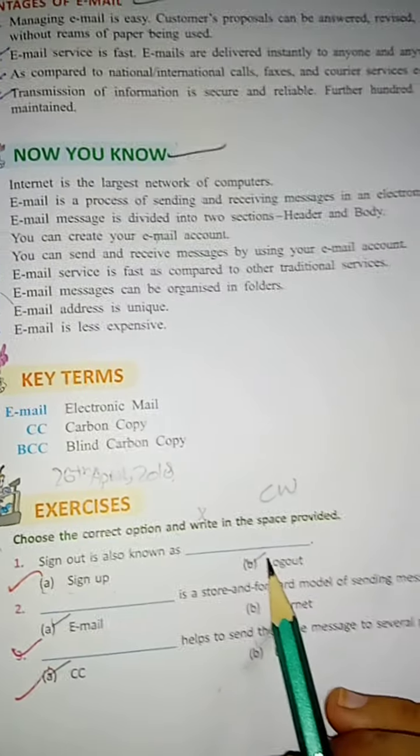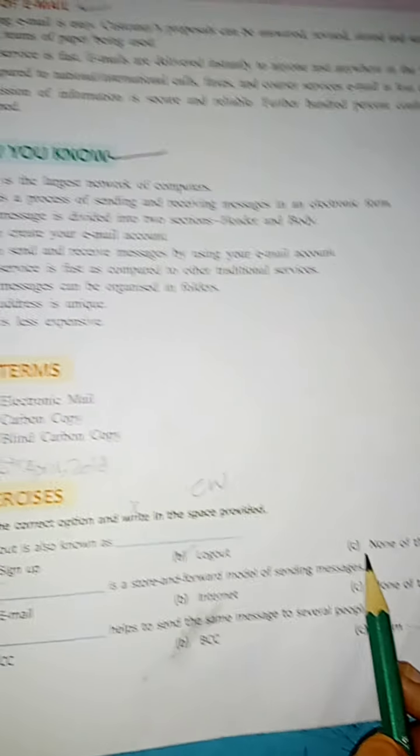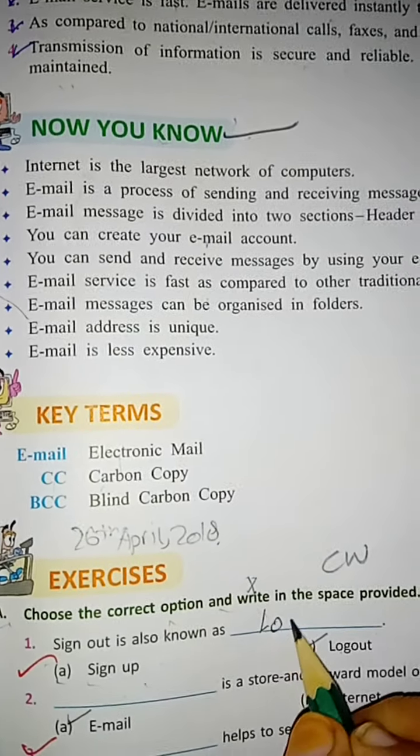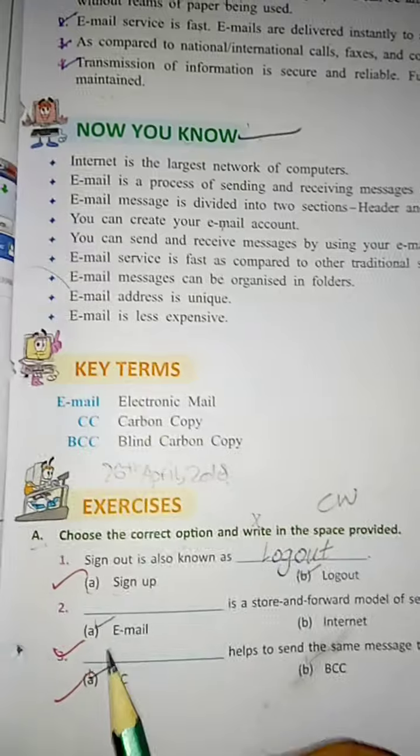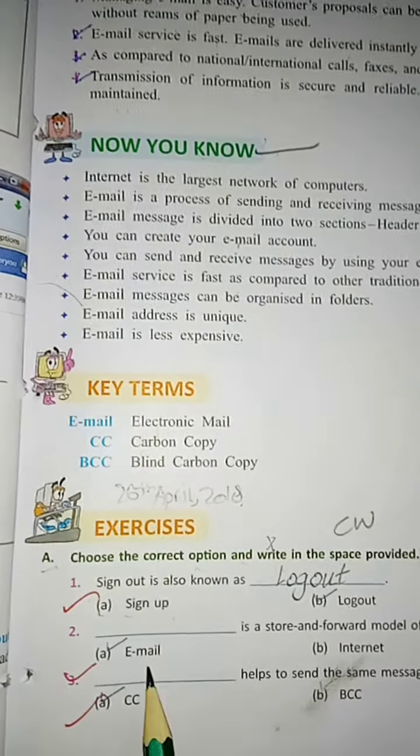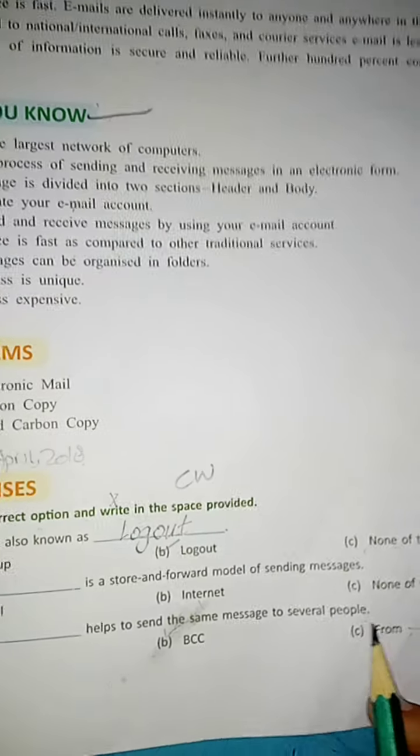Option C: none of these. And the answer is log out, right? Log out. Second, dash is a store-and-forward model of sending messages. Option A: email, Option B: internet, Option C: none of these. And the answer is option A, email.